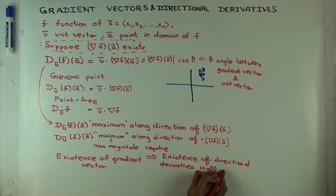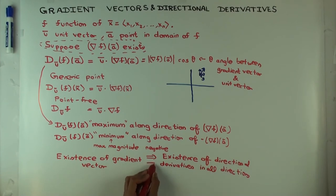However, you can have situations, and this is not the topic of this video, but you can have situations where directional derivatives exist in all directions, but the gradient vector doesn't exist. There are some of those weird counterexamples.